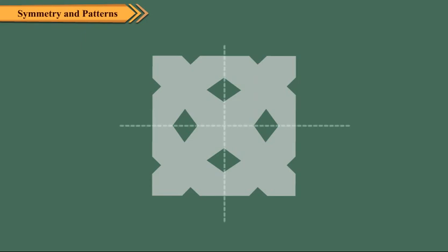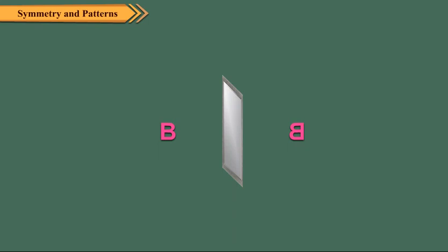The line of symmetry divides the figure into two halves. The two parts are also called mirror halves. Take a mirror and put it in front of the letter B. We can see its reflection. Here the mirror works as a line of symmetry for B and its images.